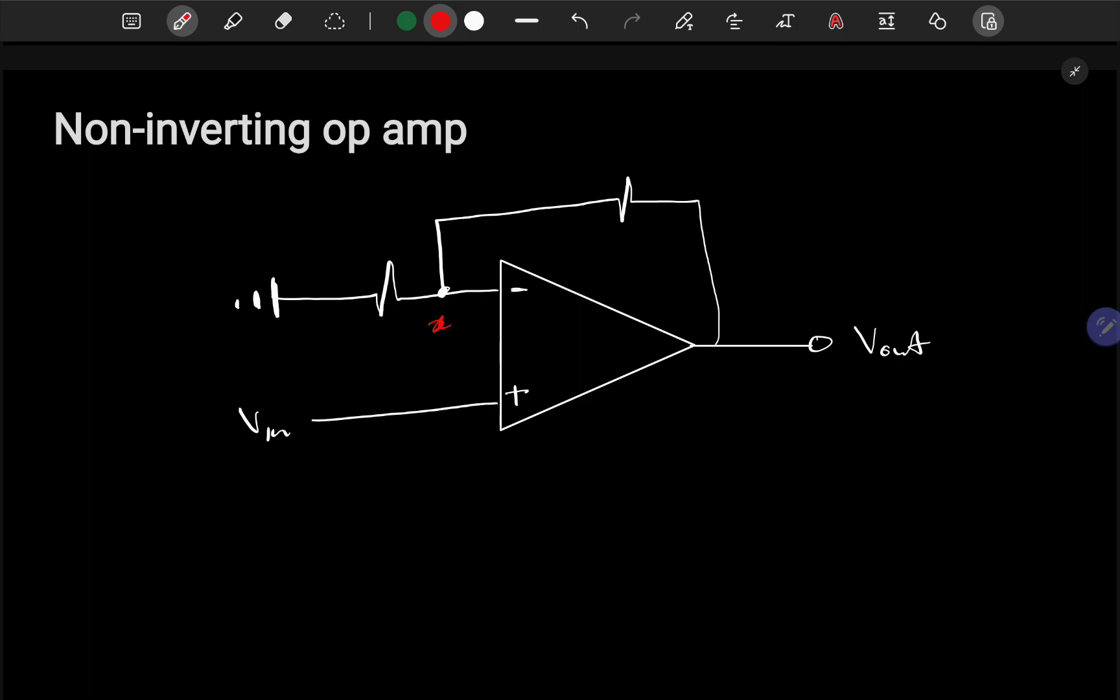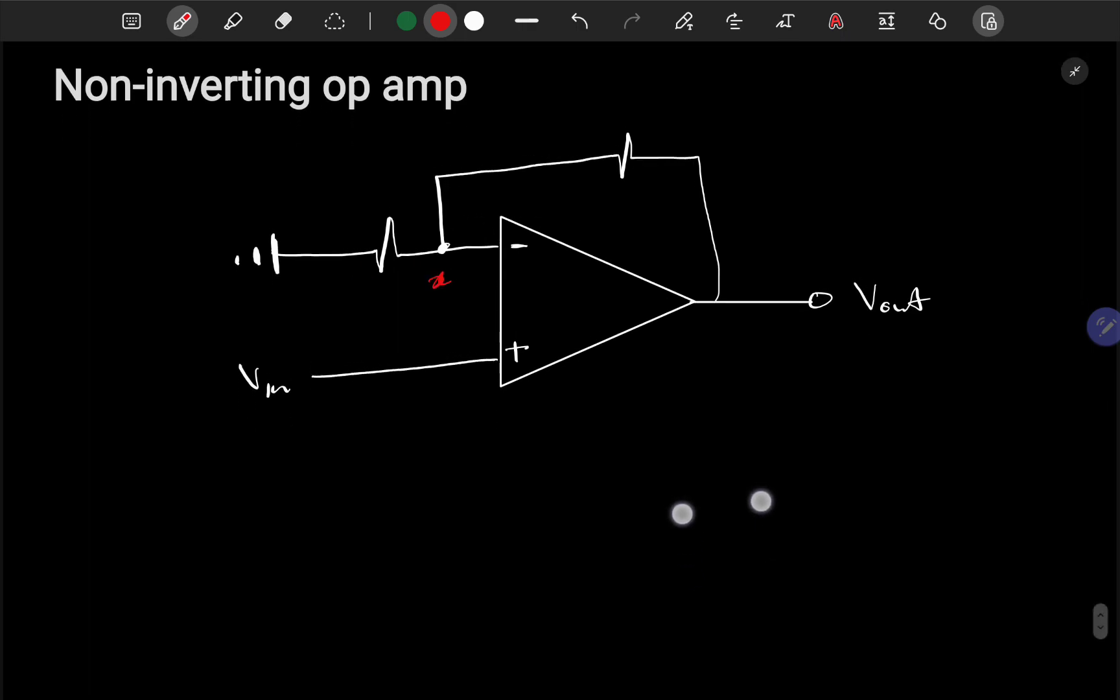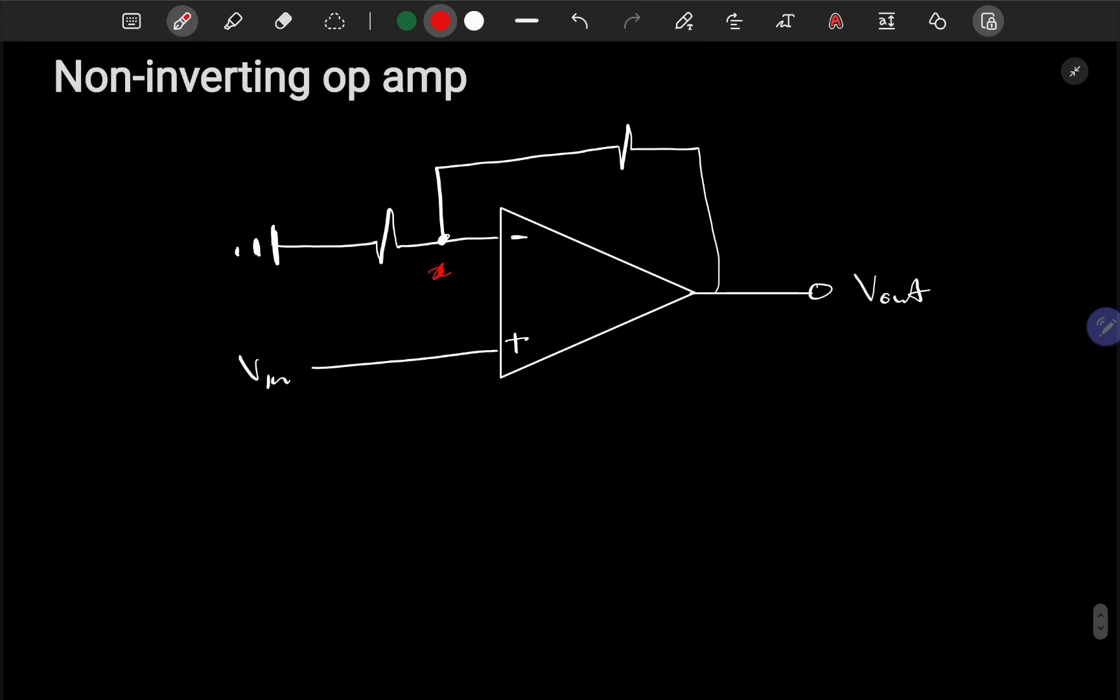The output is in the same phase as the input - it doesn't shift or negate it. So if I put in 5, it'll get multiplied to 10 or whatever the gain is, but it keeps the same sign. It's non-inverting, so the phase doesn't change.